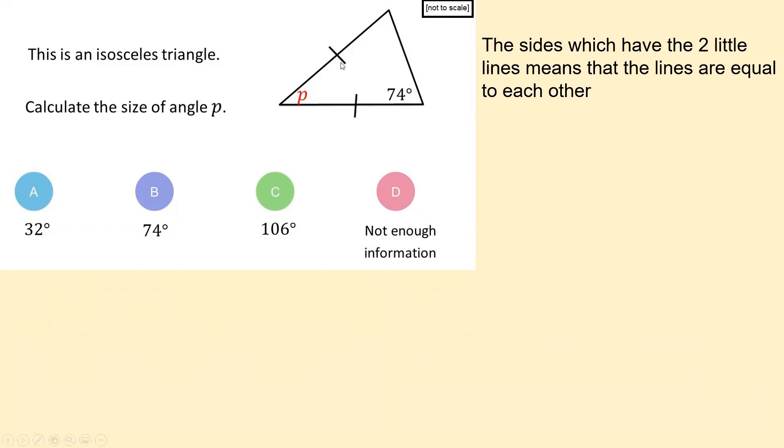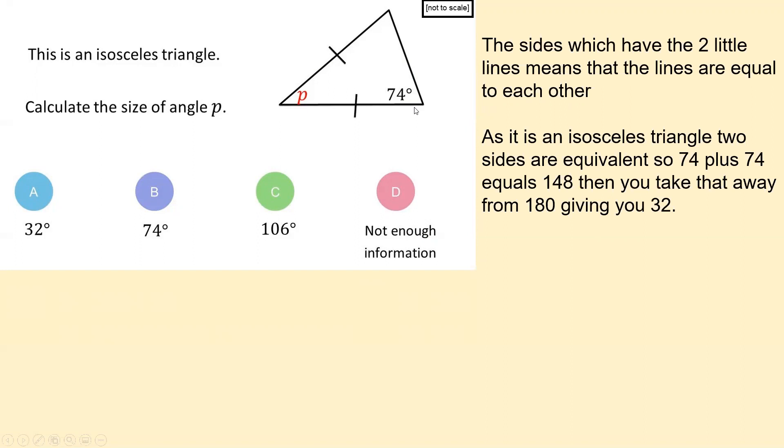The sides which have the two little lines mean the lines are equal to each other, which is very good reasoning. Yep, they have equal lengths. So we know that this angle must also be 74 over here. So, again, this next person's elaborated. Two sides are equivalent. So 74 add 74 to give us 148. And we know that the sum of the three angles is 180. So they've done the subtraction to give an answer of 32.